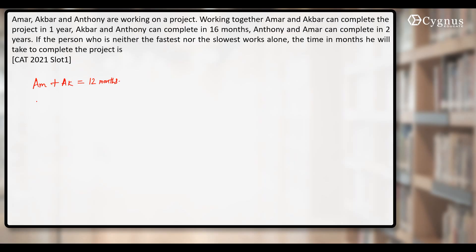Second pair is Akbar and Anthony. They take 16 months. Which is the third pair? Anthony and Amar. They take 2 years, 2 years means 24 months.